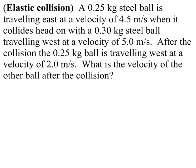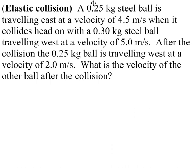Let's take a look at this question as an example, and I'll demonstrate how we use those three steps and the law of conservation of momentum to solve for an unknown variable. We have a couple of steel balls traveling in certain directions with certain velocities before a collision. The first thing I see is a 0.25 kilogram ball traveling east at a velocity of 4.5 meters per second.